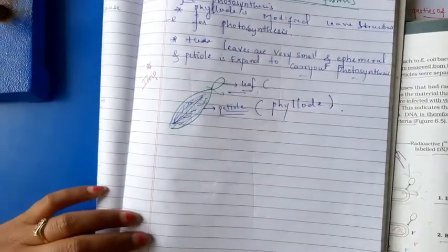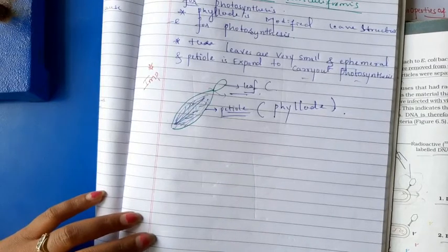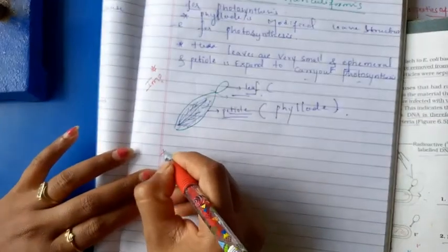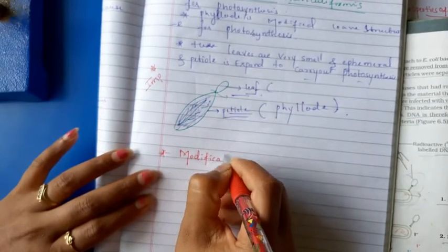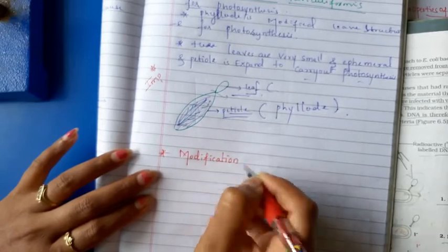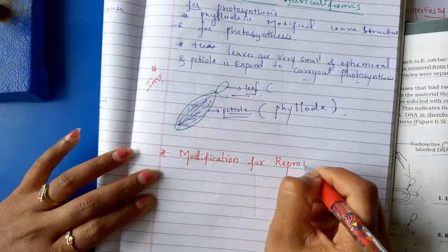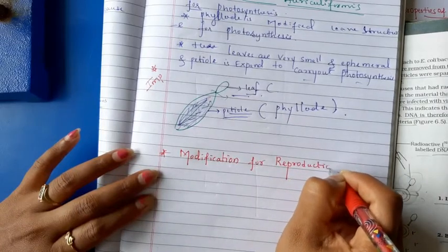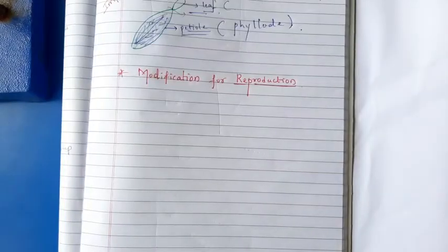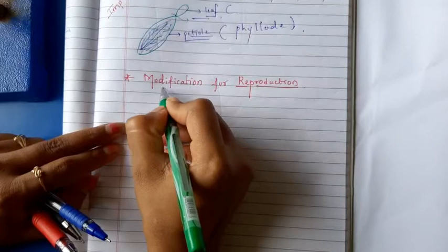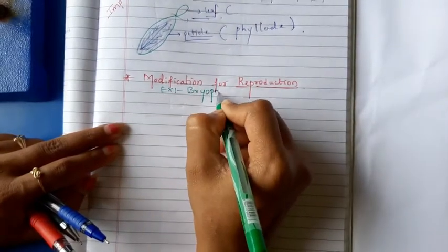Next, we will move to the next important modification — that is for reproduction. Modification for reproduction: example, I will give Bryophyllum.